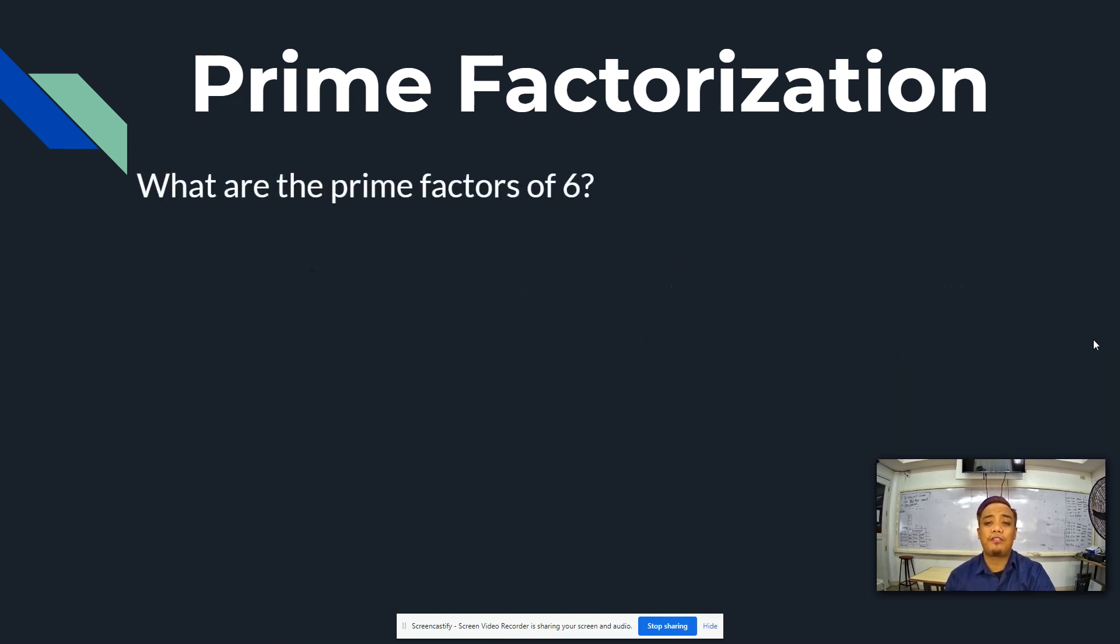Let's say we are looking for the prime factors of 6. We will look for the factors wherein the product will be 6. We have 2 times 3. We will stop here because 2 and 3 are prime factors already. Therefore, the prime factors of 6 are 2 and 3.